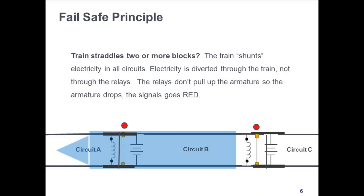The concept of resistance is important — energy will flow through the path of least resistance. Electricity won't travel through the relay when it can more easily travel through the wheels and axles of a train. When the train straddles the insulated joints between blocks, the train acts as an electrical conductor between the track circuits. The electrical current is diverted through the train, not the relay, so gravity brings the armature down and the signal behind the train goes red. If you have an 8,000-foot freight train and 10,000-foot blocks, it is not until the last axle leaves the last block that the signal will change to something other than red.